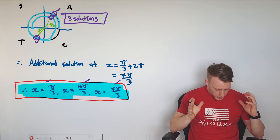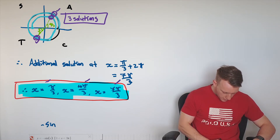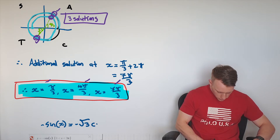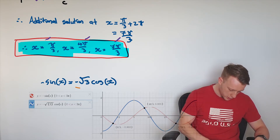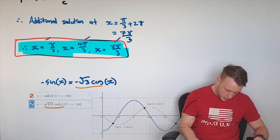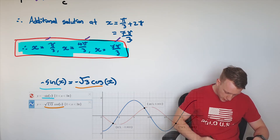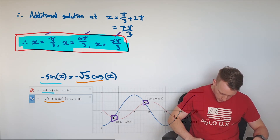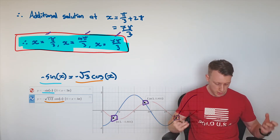To visually verify this, our original equation was negative sine of x equals negative square root of 3 cos of x. Setting those equal to each other as simultaneous equations, we find three intersecting points with x values at π/3, 4π/3, and 7π/3. Those are our three solutions.